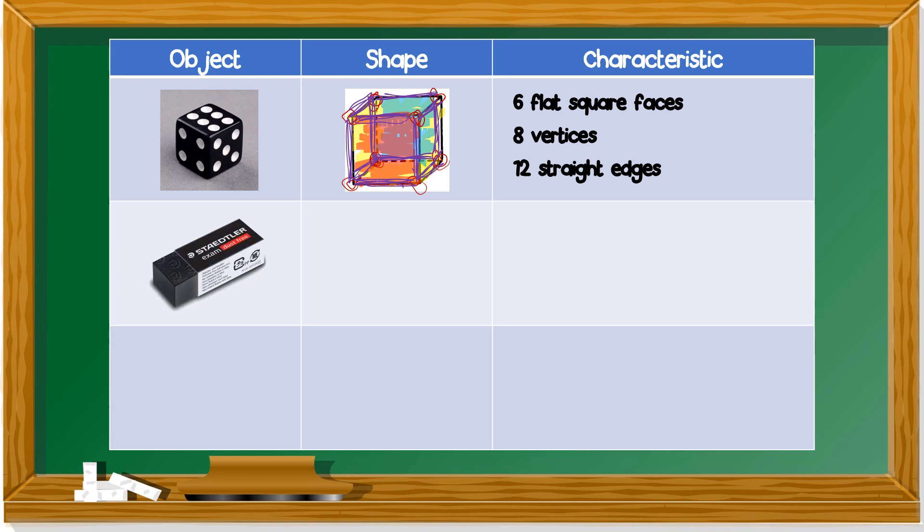Next one. This is an eraser. The eraser is in the shape of cuboid. This is a cuboid. Let's look at the characteristic. It has six flat rectangular faces. Let's find out. One, two, on top three, bottom four, left side five, right side six. So there are six flat rectangular faces.